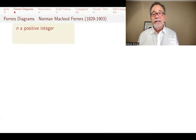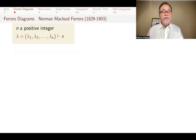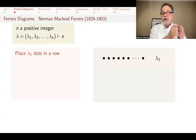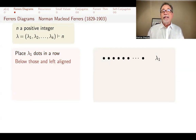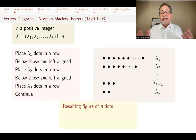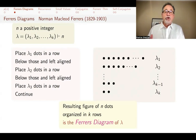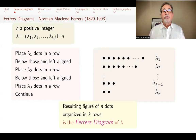Ferrer's Diagrams are a way of visualizing these partitions, and they're helpful when making arguments. In fact, sometimes you can use Ferrer's Diagrams to come up with results you might not have guessed before. If n is a positive integer and lambda is a partition of n, you place lambda 1 dots in a row, then below those and left aligned, lambda 2 dots, then lambda 3 dots, and so on. You'll have n dots total organized in k rows. This is called the Ferrer's Diagram of lambda, named after mathematician Norman Ferrer's, who first used these to prove a theorem we'll see later.